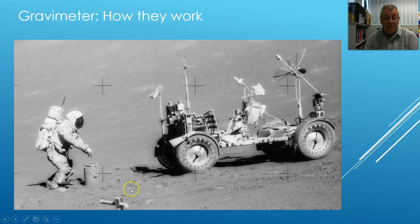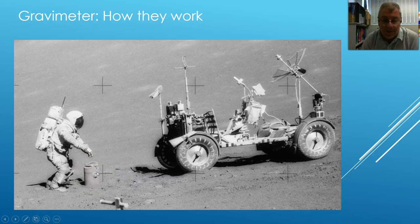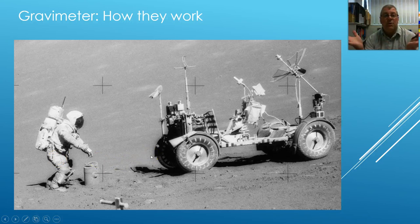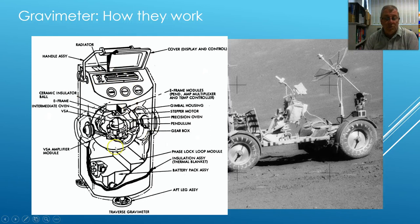They took a big leap ahead because they wanted to take one to the Moon. This is it being carried around by one of the astronauts. A lot of things came out of the space program, and highly accurate mobile gravity meters was one of those things. It was all condensed down into a very small pack.